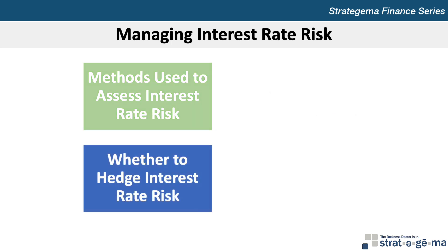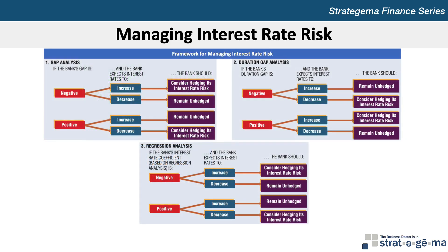A bank can consider the measurement of its interest rate risk along with its forecast of interest rate movements to determine whether it should consider hedging that risk. The general conclusions resulting from a bank's analysis of its interest rate risk are presented in this exhibit, which shows three methods commonly used by banks to measure their interest rate risk. Because none of these measures is perfect for all situations, some banks measure interest rate risk using all three methods.